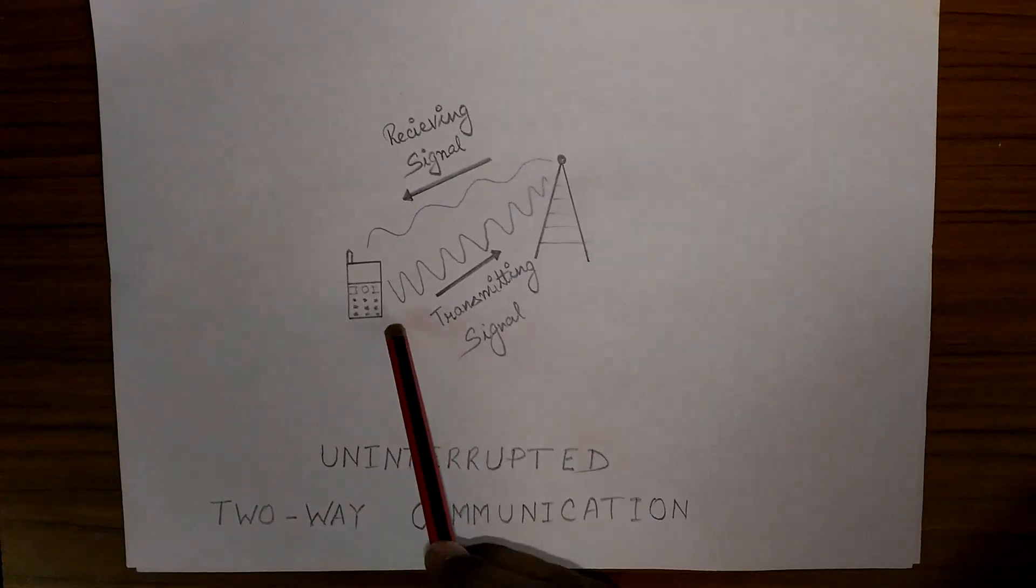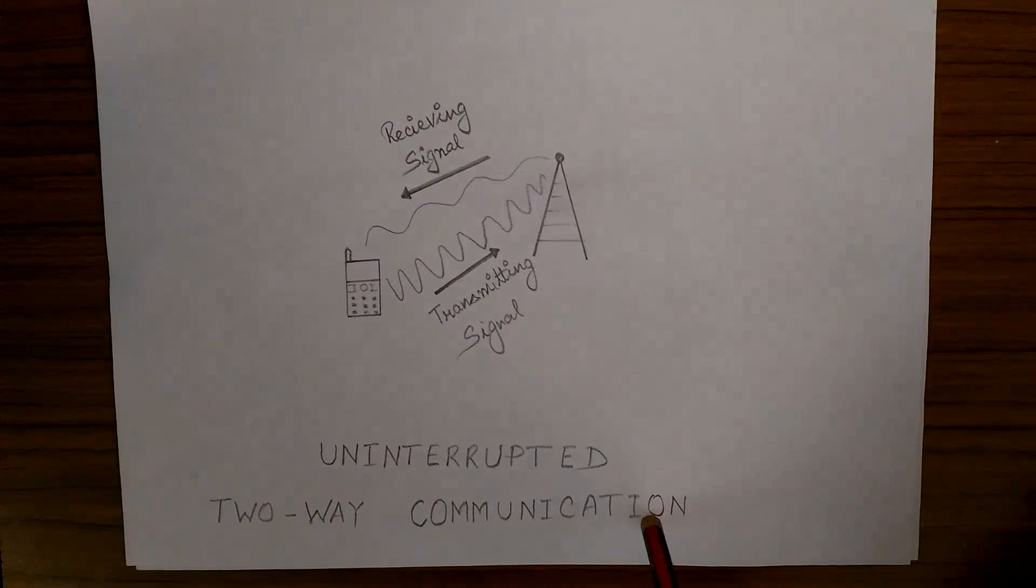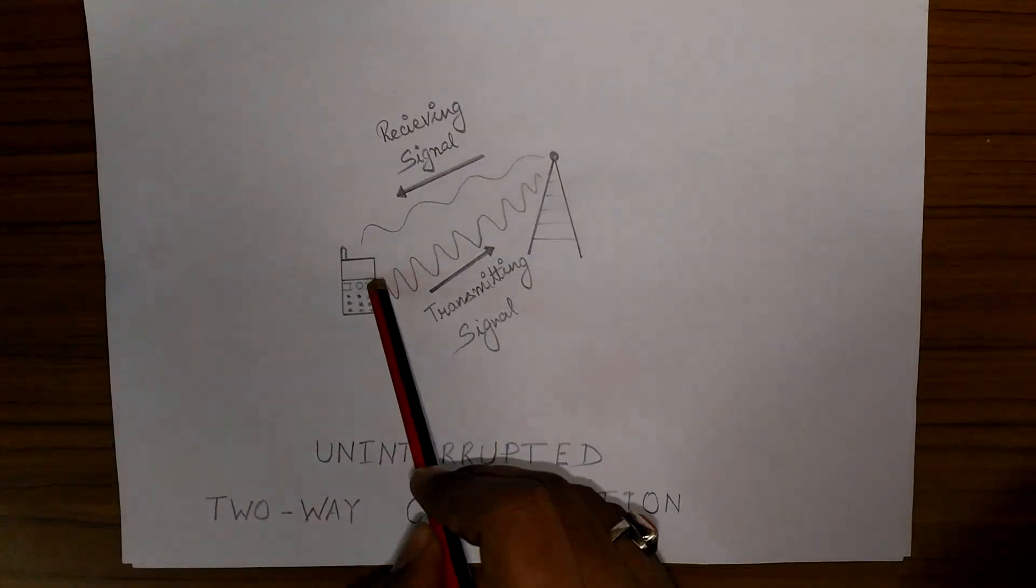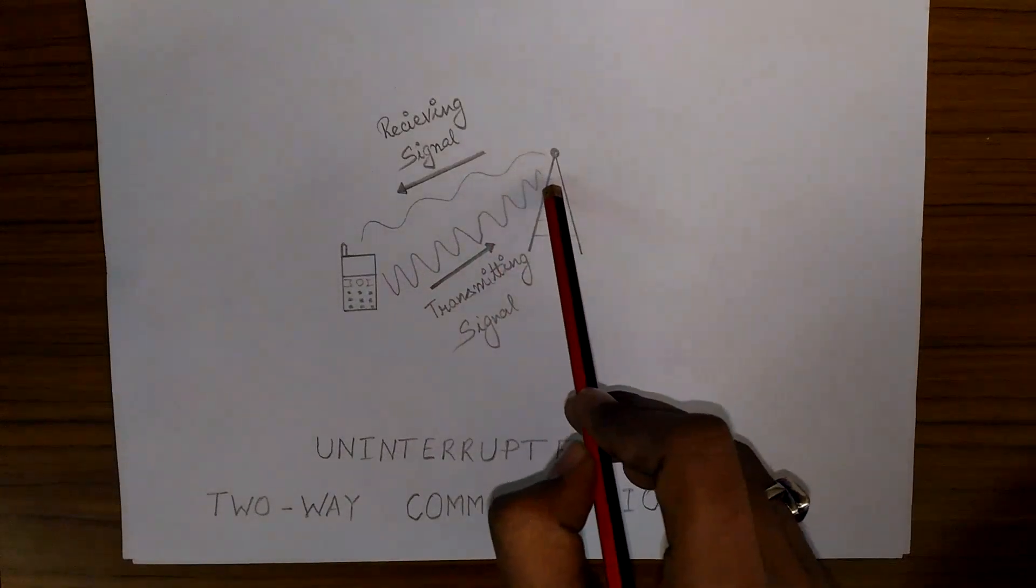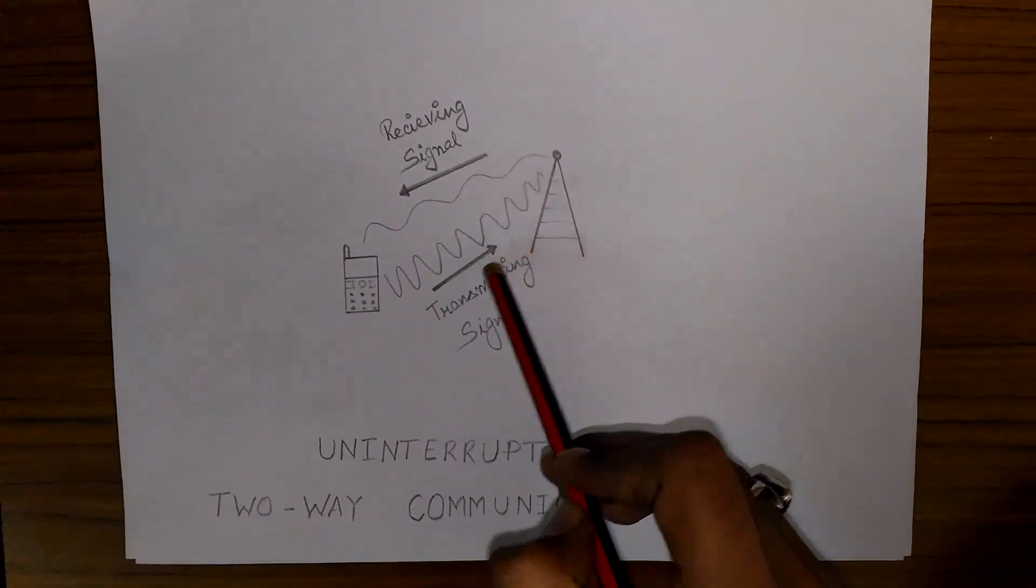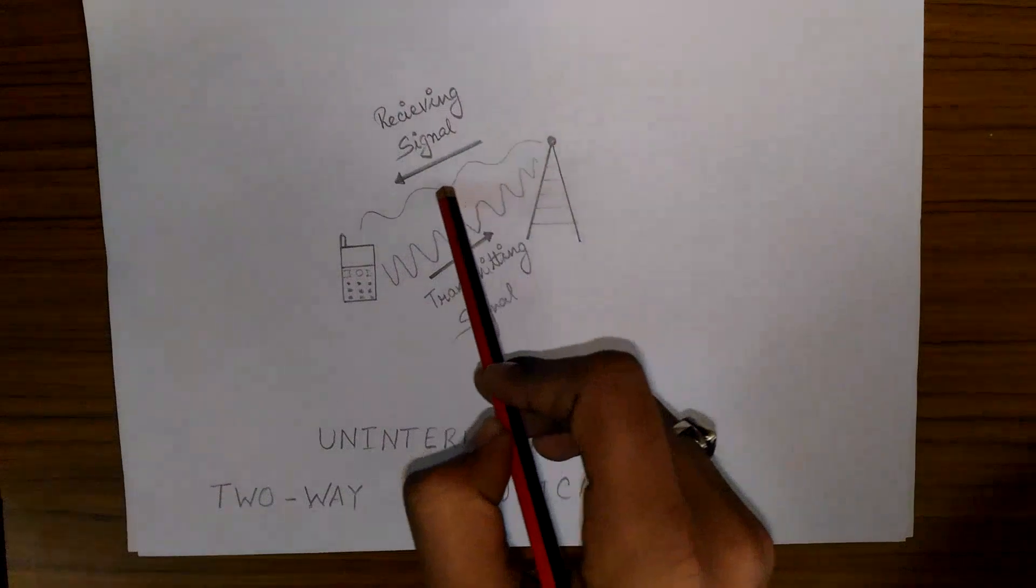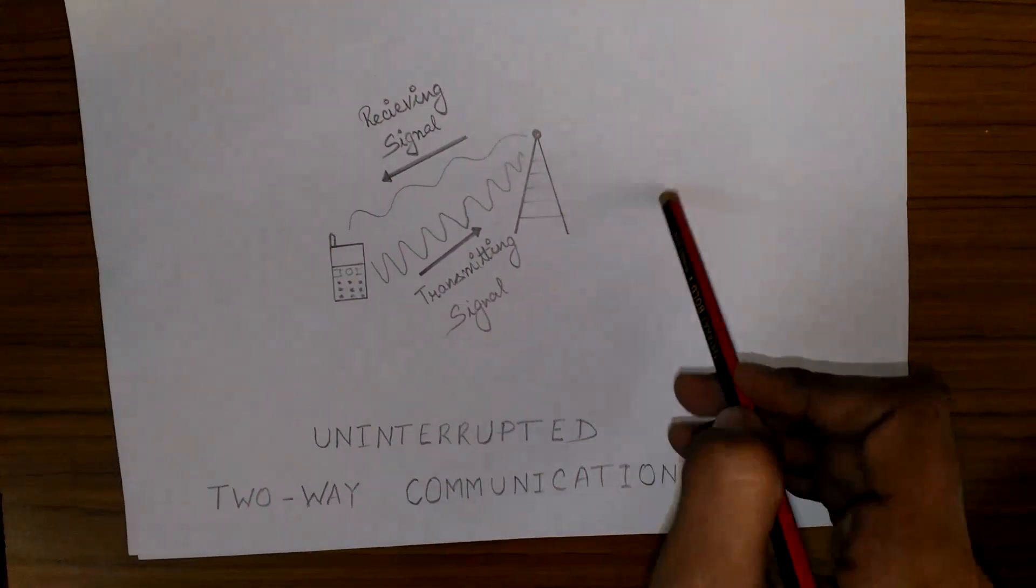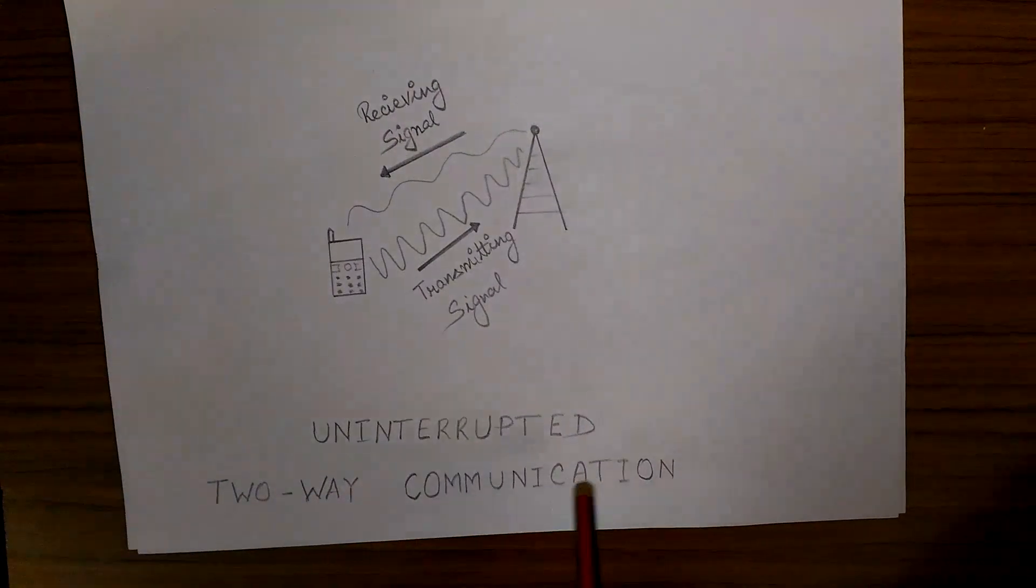Whenever we call, we have an uninterrupted two-way communication. We speak and listen at the same time. How does that happen? Because we use two different frequencies here—one for the transmitting signal, that is for speaking, and one for receiving signal, that is for listening. That's how we have duplex communication, or in simpler words, uninterrupted two-way communication.